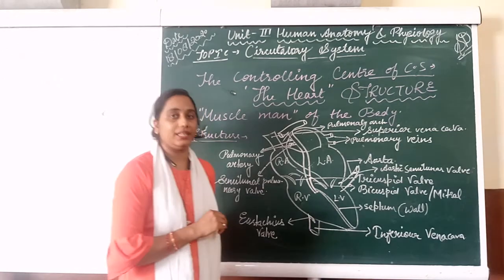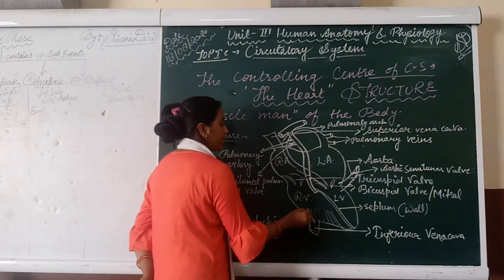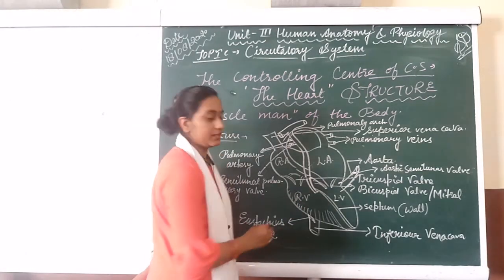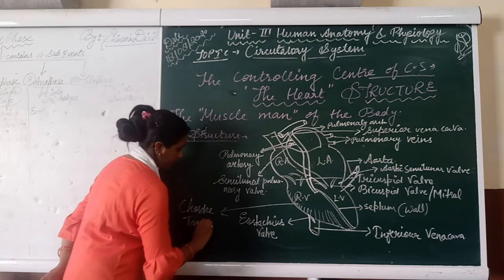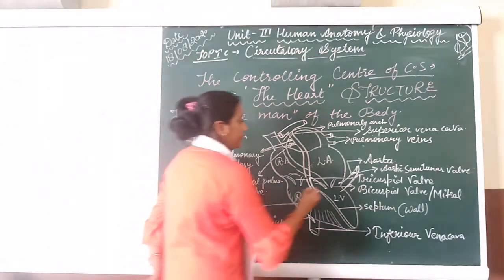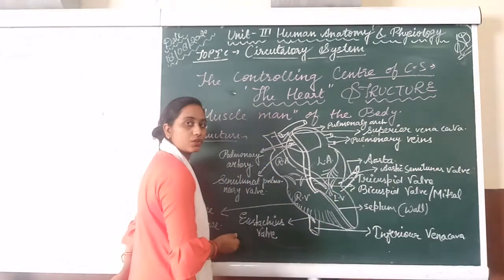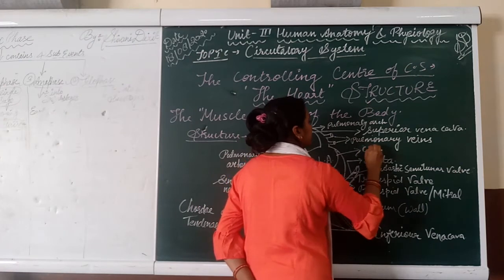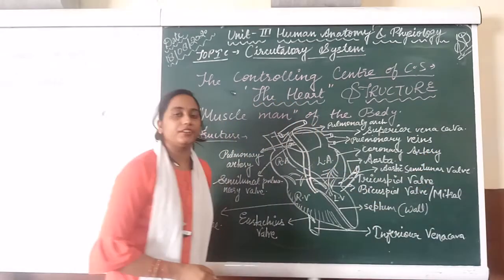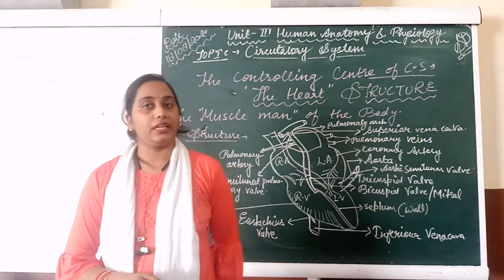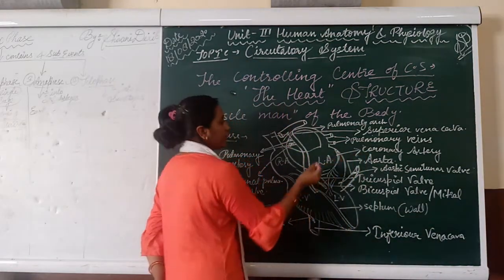The next important thing in the diagram of the heart is the fibrous structures formed by the tendinous tissues; they are known as chordae tendineae. There is also the branching of the pulmonary artery in the vessels of the heart. And the most important valve present in the coronary artery is the coronary valve.